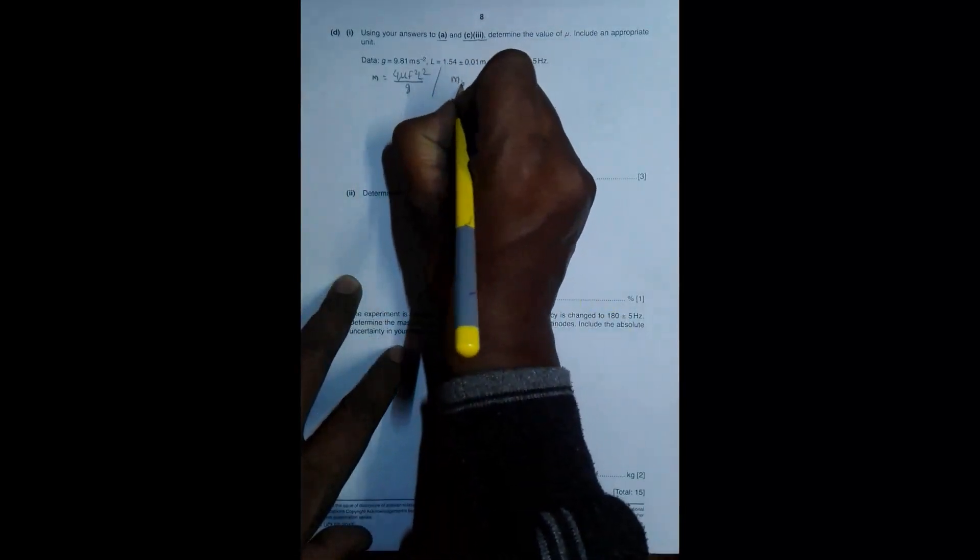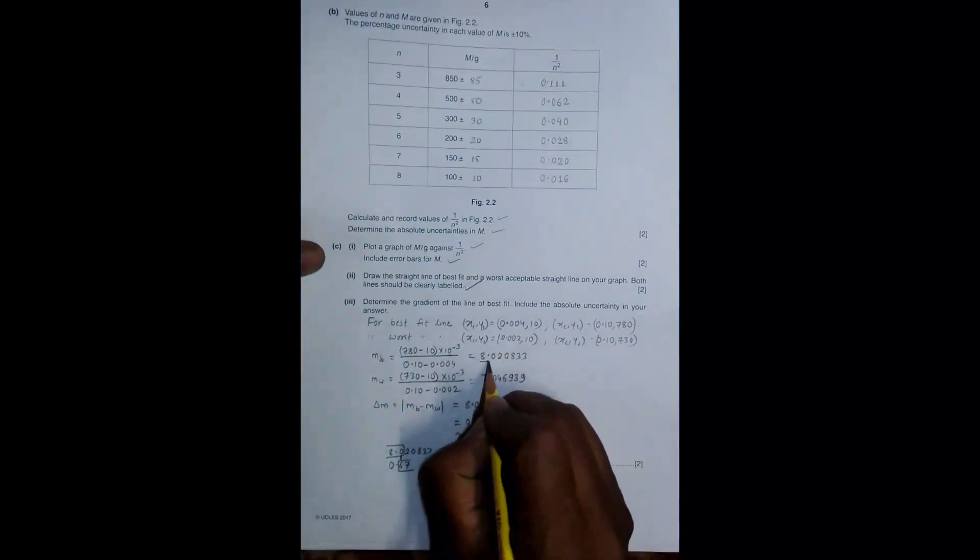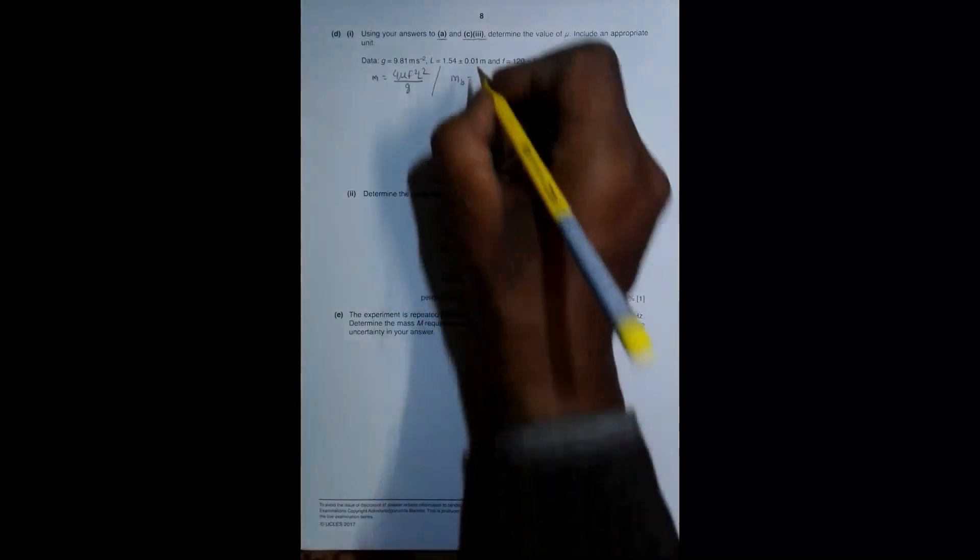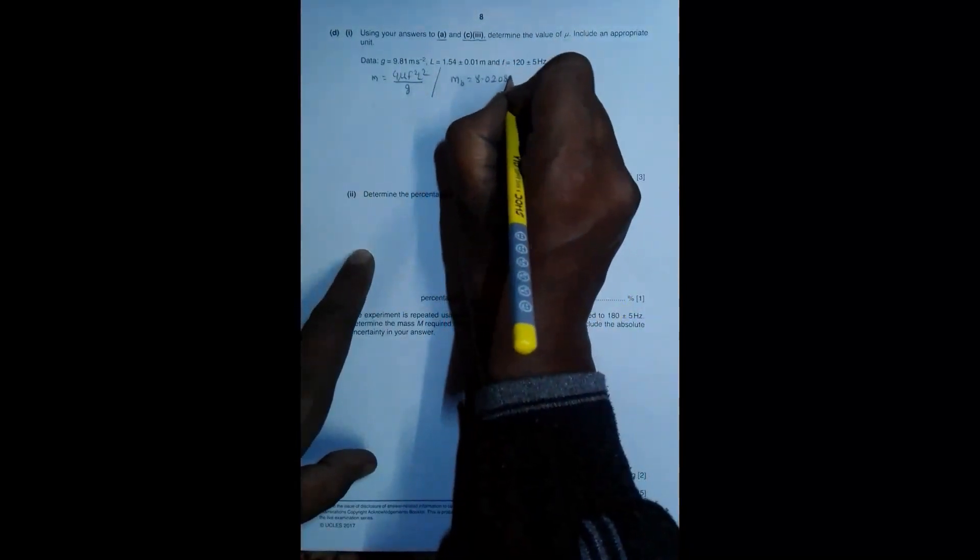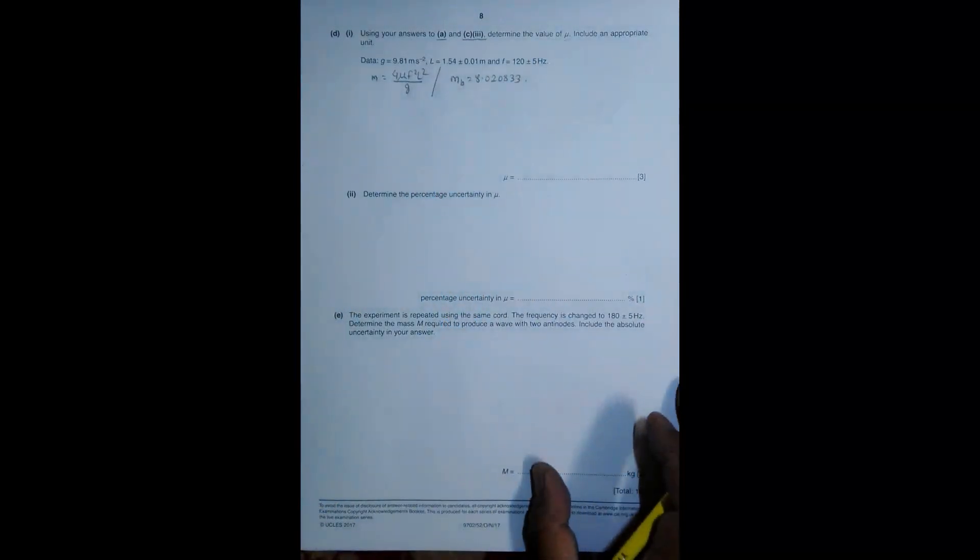C3 is the value of the slope that we have done. So the value of the slope here is, M best is equal to, let me go through the previous page, M best is equal to this much, so it is 8.020833. So I have to use these values to find the value for mu.